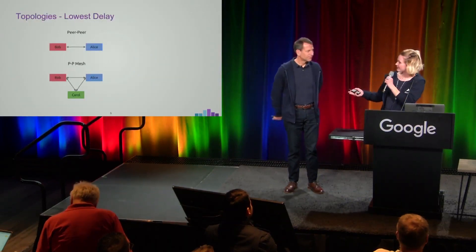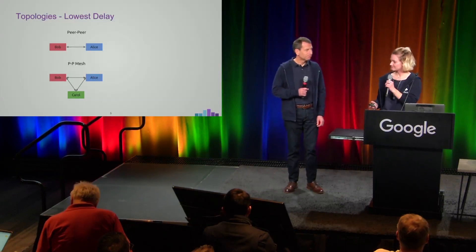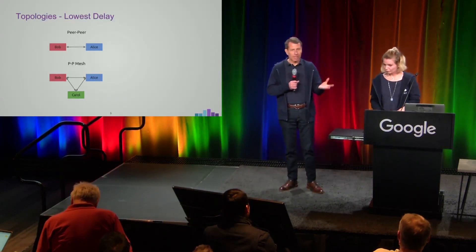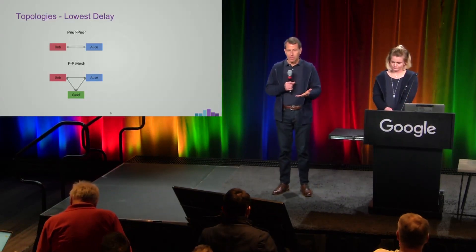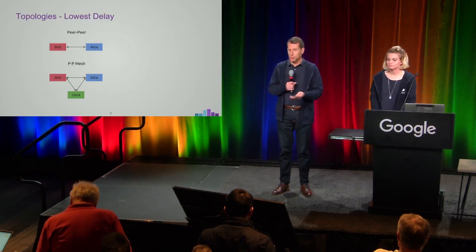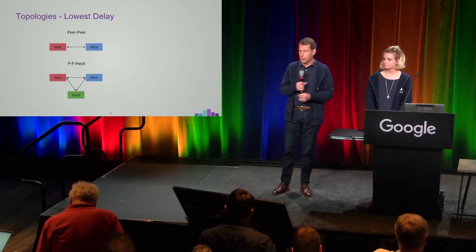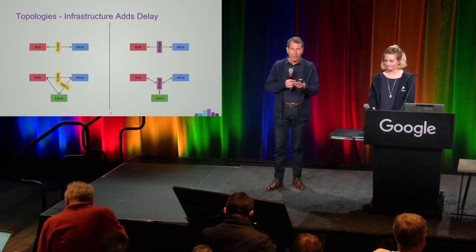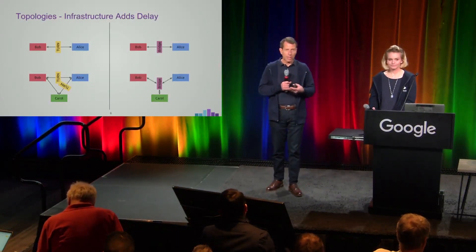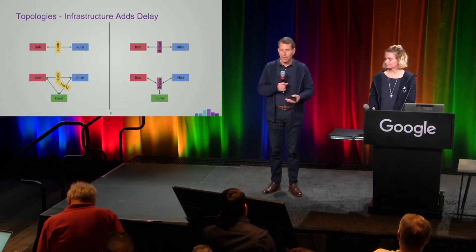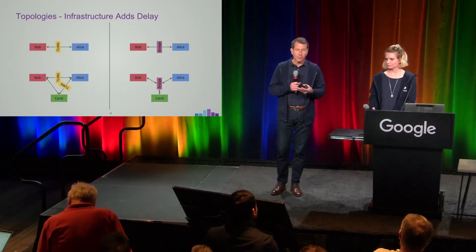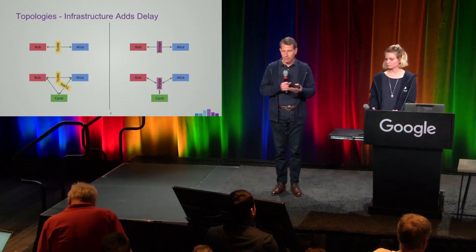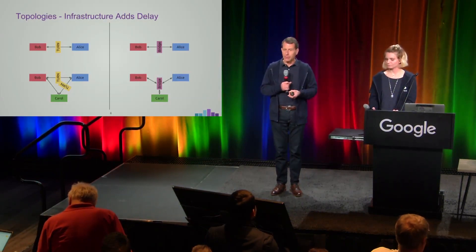Now I'll give it over to Carl to talk about the different topologies. WebRTC is, by nature, peer-to-peer. When you have more than two participants, you create a mesh of peers, and peer networks produce the best quality in terms of latency and lowest delay. As we add infrastructure into the network, we start to increase delay. On the picture on the left, we have Alice and Bob. Alice is behind a strict enterprise firewall and needs a TURN service to communicate with Bob, so the TURN service is introduced and adds some delay.